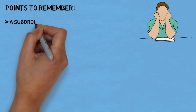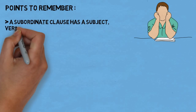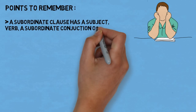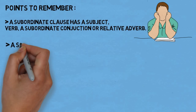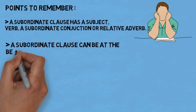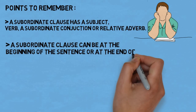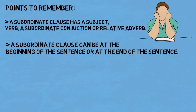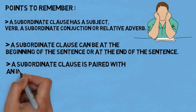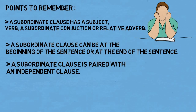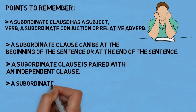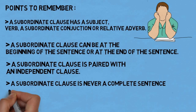Points to keep in mind: a subordinate clause has a subject and verb; a subordinate conjunction or relative adverb is present. A subordinate clause can appear at the beginning or end of a sentence. A subordinate clause is paired with an independent clause and is never a complete sentence on its own. That's all for today — stay tuned for more such videos.